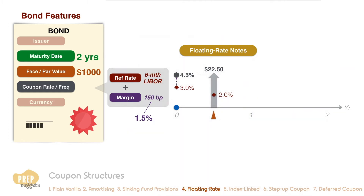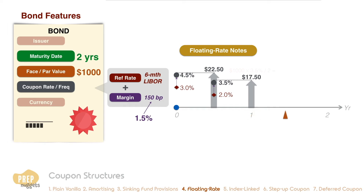Adding the interest margin of 1.5 percent, the coupon rate to be applied is 3.5 percent. Dividing by two and multiplying by the principal of $1,000, the coupon payment at the one-year mark should be $17.50. So you get the idea — the coupon payment is based on the LIBOR rate at the beginning of each period.